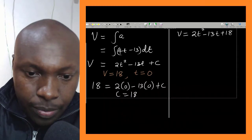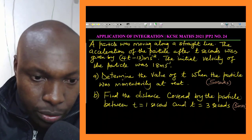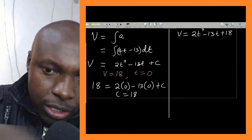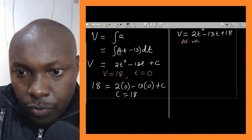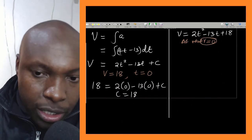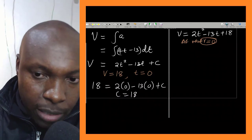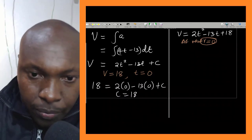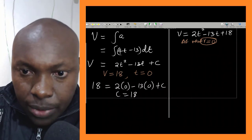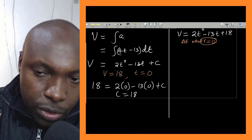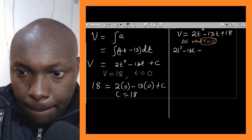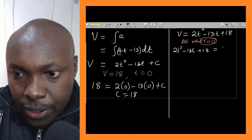After getting the equation for velocity, let us address part a: determine the value of t when the particle was momentarily at rest. The particle is at rest when velocity equals zero, so we substitute v = 0 into the velocity equation: 2t² minus 13t plus 18 equals zero.